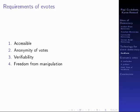Now if you're going to have an electronic voting system, it must be accessible, it must be anonymous so no one knows how you voted, it must be verifiable, and it must be free from manipulation.